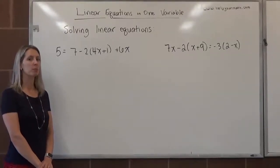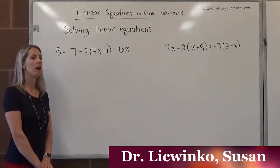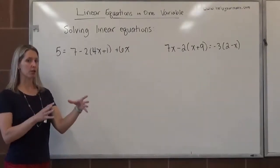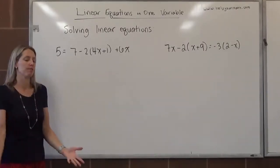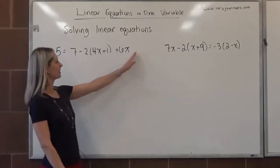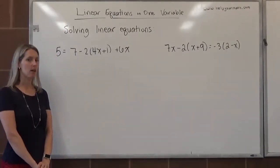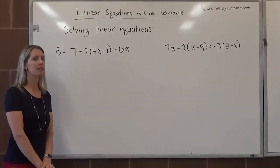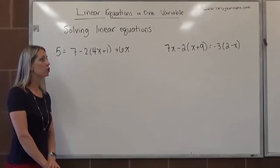In this video, we're going to solve equations where before we start solving, we do have to simplify one or both sides of the equation. An equation has two expressions that are set equal to each other. In this case, the left hand side is the expression just 5. The right hand side has this expression 7 minus 2 times 4x plus 1 plus 6x. Before we get started with solving, we want to clean up as much as we can each expression. When we clean up or simplify an expression, we usually do one of two things.